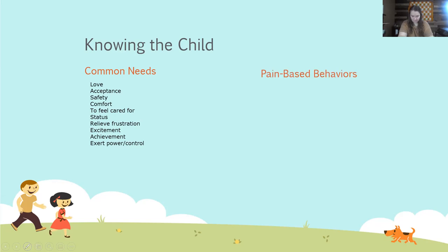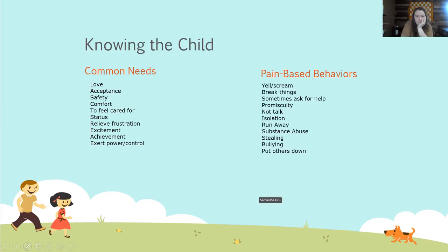Next, pain-based behaviors. Pain-based behaviors are the end result if these common needs are not met. They may look like yelling and screaming, breaking things, asking for help excessively with things they'd typically be able to do, being promiscuous, talking a lot, making friends who make poor choices, running away, using drugs and alcohol, stealing, bullying, and putting others down.